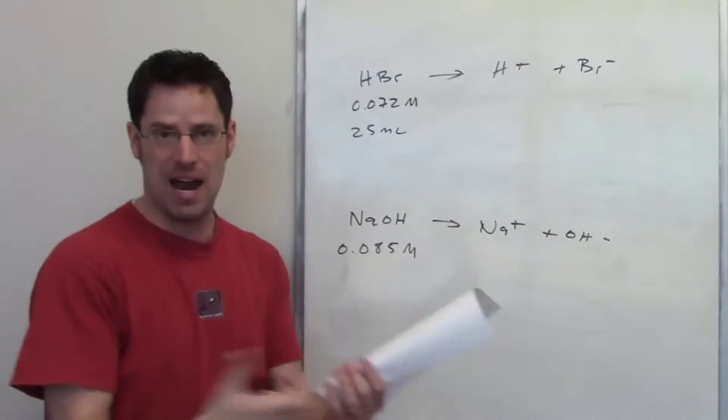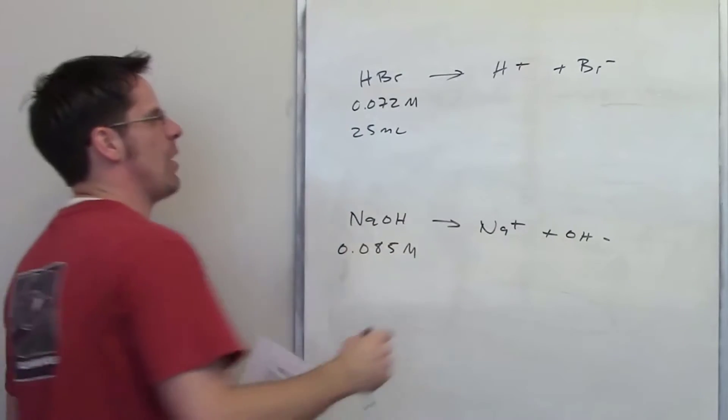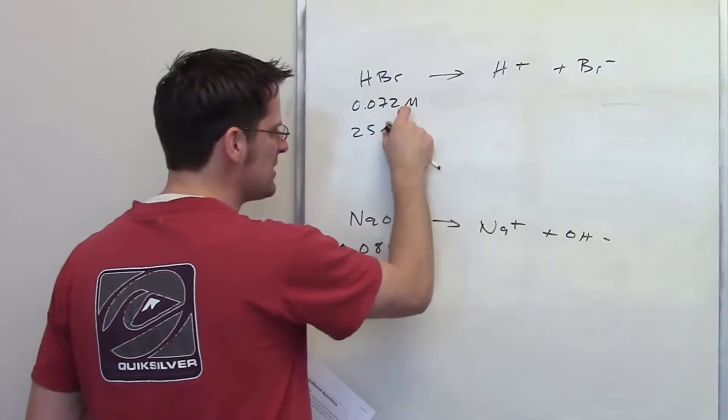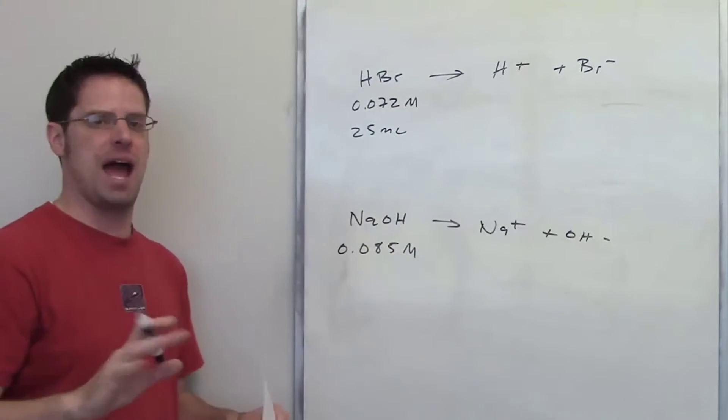When they combine, they form H2O. In order to do that, I have to figure out how many moles of H+ this amount of HBr is going to spit out. How do I do that? By using the glory of math.